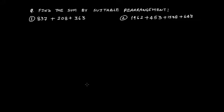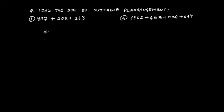The basic point of doing the rearrangement is to simplify our expression and find the answer. Of course you can just add 837, then 208, and then 363 the normal way. But then what is the point of learning the properties of whole numbers? They provide us an easy way to solve our problem and our arithmetic operation gets easier.